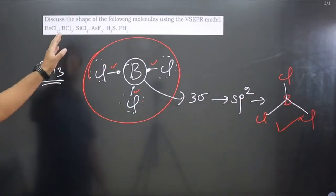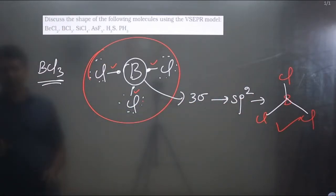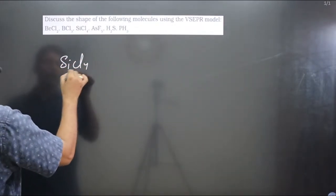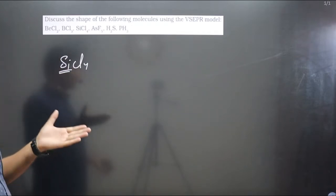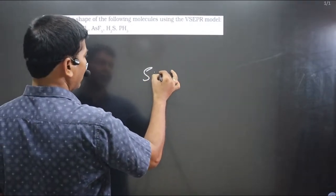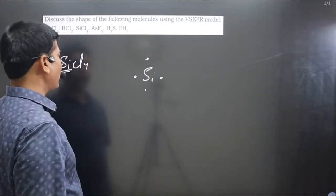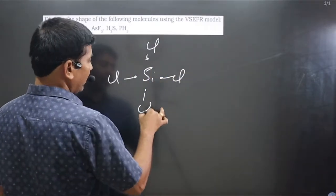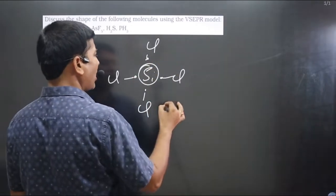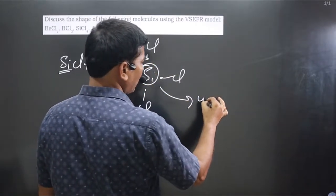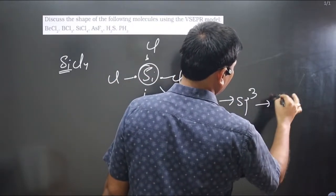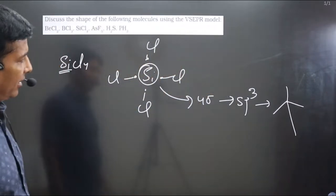Next we have SiCl₄. Silicon is present in the carbon family, 14th group, so it also has four valence electrons. Chlorine, being a halogen, always forms a single bond. Now we calculate the number of sigma bonds: silicon is forming one, two, three, four — four sigma bonds.